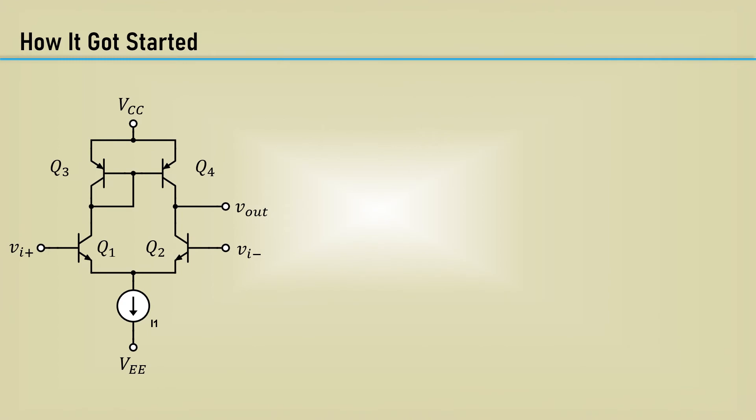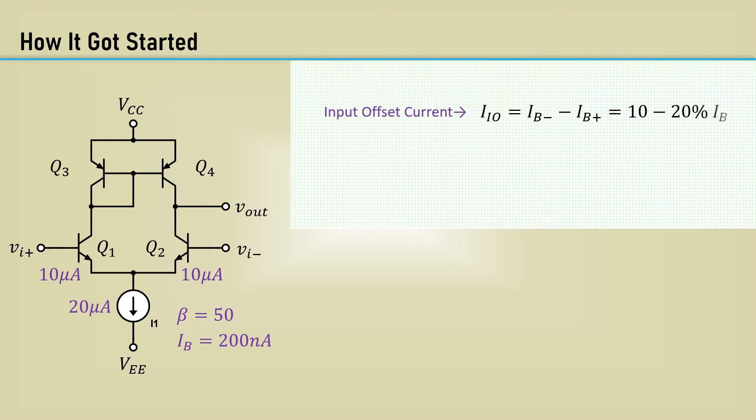Let's talk about how this got started. Here's a simplified schematic of an early op-amp front end. To get reasonable speeds, the emitter tail was in the range of 20 microamps. This meant each transistor in the differential pair was about 10 microamps. With a beta of 50, this meant the input bias current was about 200 nanoamps. Since the input offset current was about 10 to 20% of the bias current, canceling the input current with a resistor made a significant difference in the output voltage error.